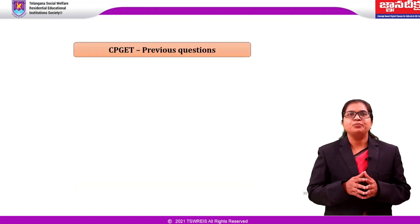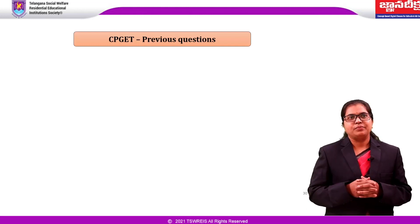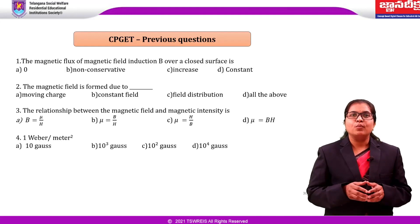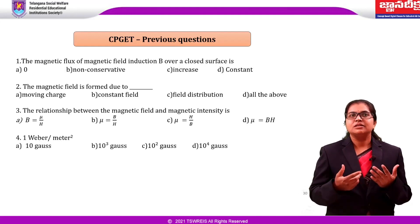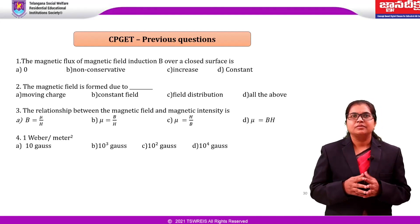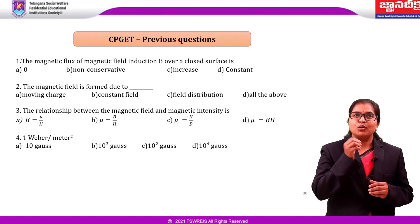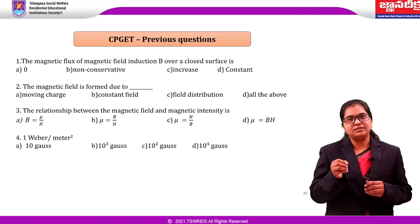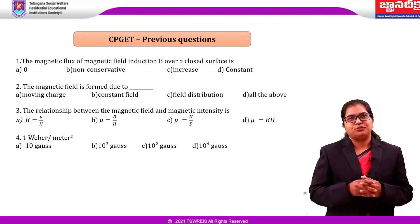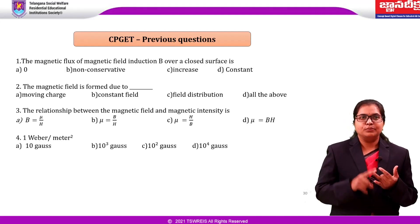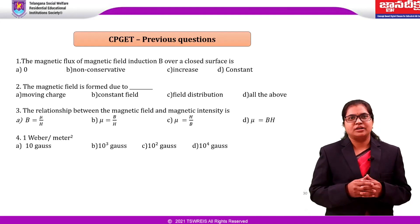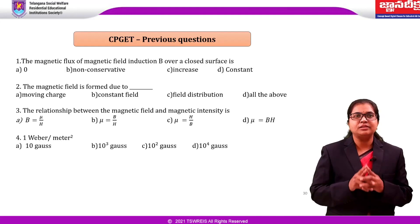Now it is quiz time. First question: The magnetic flux of magnetic field induction B over a closed surface? Options: zero, non-conservative, increase, constant. Answer is zero, because for a closed surface the magnetic flux is zero. Second question: The magnetic field is formed due to? Options: moving charge, constant field, field distribution, all variable. Answer is moving charge, because moving charge creates the magnetic field.